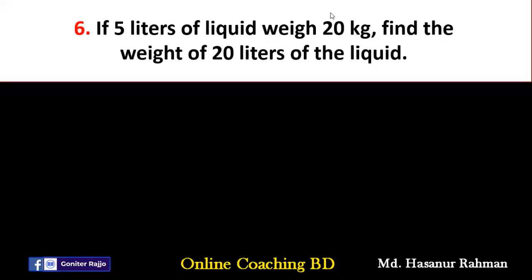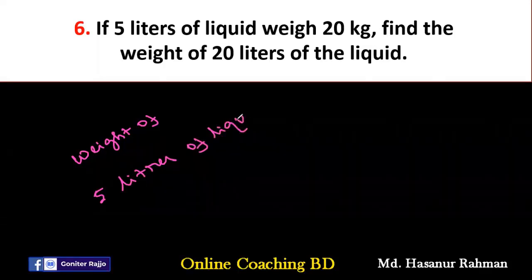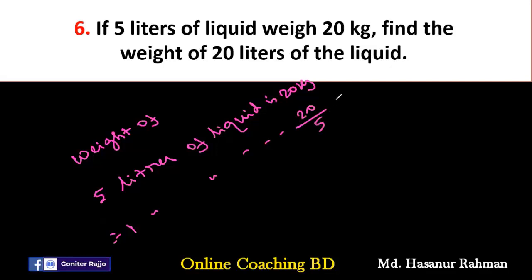Number 6: If 5 liters of liquid weigh 20 kg, find the weight of 20 liters. Weight of 5 liters is 20 kg, so weight of 1 liter is 20 divided by 5 kg. Therefore weight of 20 liters is 20 multiplied by 20 divided by 5.